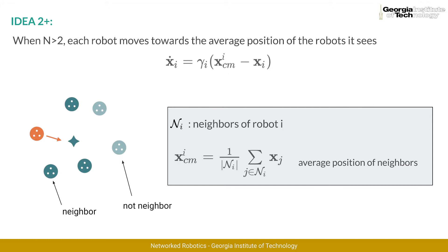Let's now extend the same idea to more than two robots. In this case, we need to take into account that robots can measure their relative distance with respect to more than a single robot. For a given robot i, we call this group of robots the neighbors of robot i, and we denote them with curly N sub i. Then, instead of moving towards a specific robot, we assume that each robot moves towards the average position, or center of mass, of its neighbors. We denote the center of mass of robot i's neighbors as x_cm of i.